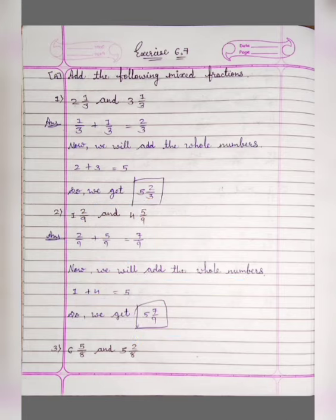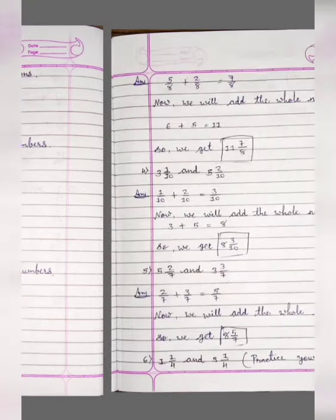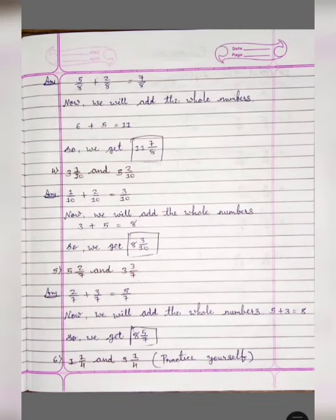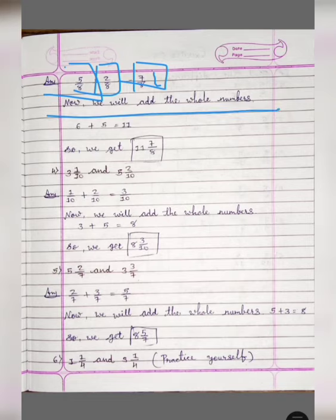In the same way, number 3: 6 and 5 upon 8, and 5 and 2 upon 8. 5 upon 8 plus 2 upon 8 is equal to 7 upon 8. Now we will add the whole numbers: 6 plus 5 is equal to 11. So we get the answer 11 and 7 upon 8.